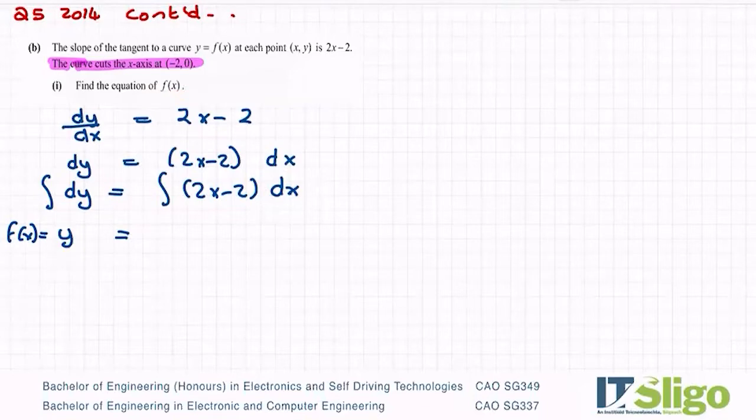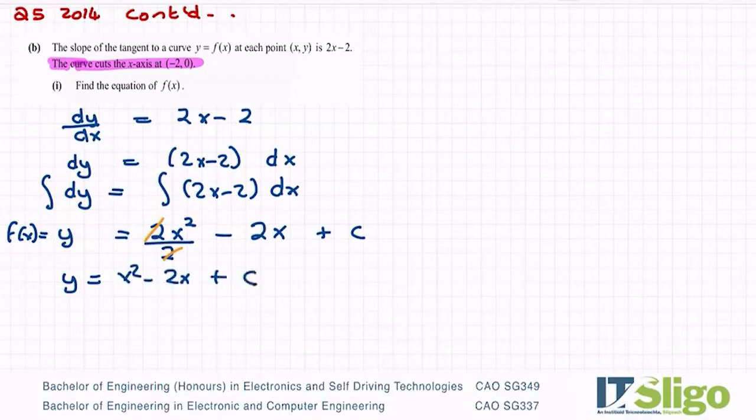So if I integrate this, take each term, increase the power of x by 1 and divide by the new power, increase the power of x by 1. And in this case, we have x to the power of 0, in other words, there's no x. So you increase the power of x by 1, plus c. Or y is equal to, I can cancel out these two twos, x squared minus 2x plus c.